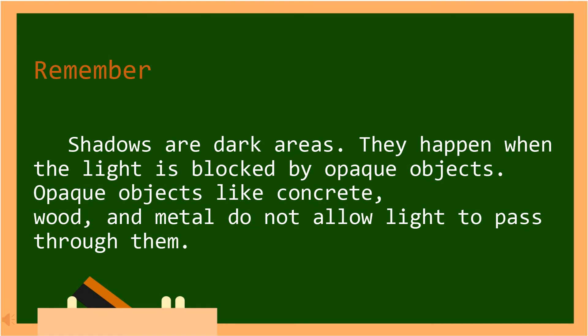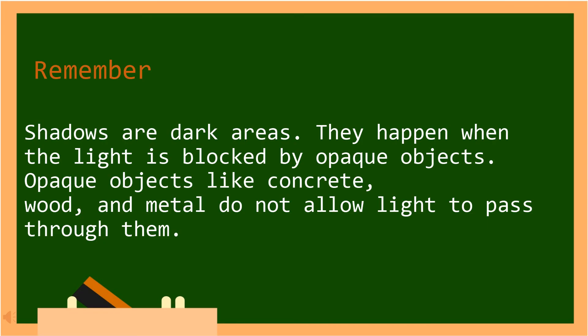Shadows are dark areas. They happen when the light is blocked by opaque objects. Opaque objects like concrete, wood, and metal do not allow light to pass through them. In Tagalog, ang mga anino ay madilim na lugar. Nangyayari ang mga ito kapag ang ilaw ay hinaharangan ng mga opaque na bagay. Tandaan na ang mga opaque na bagay tulad ng kongkreto, kahoy, at metal ay hindi pinapayaga ng ilaw o sikat ng araw na dumaan sa kanila.